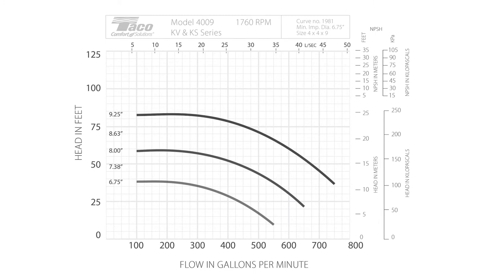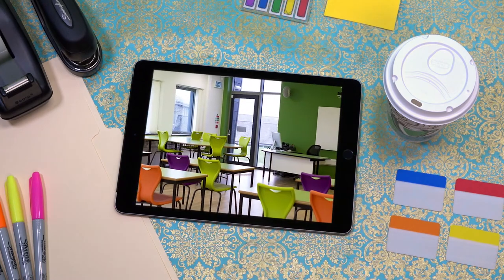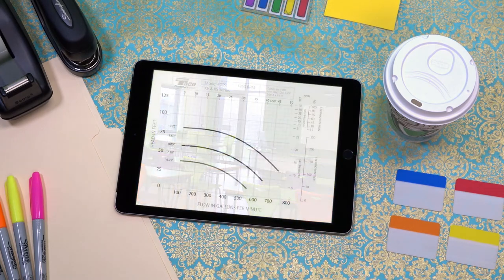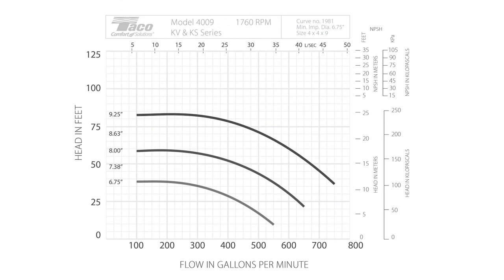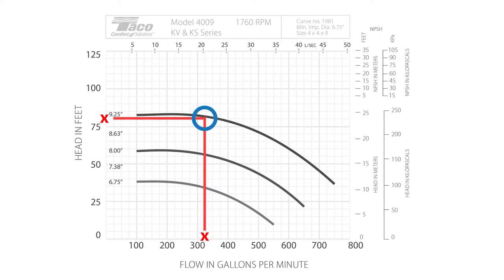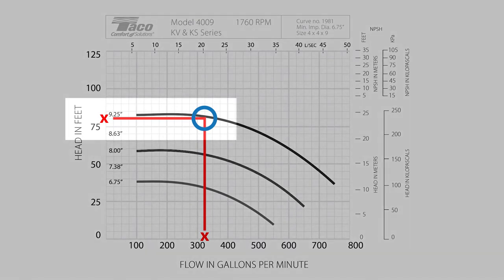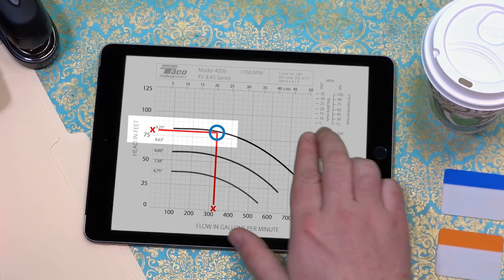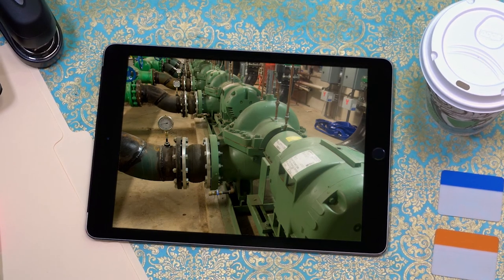Now you can use this chart to choose a pump that meets the requirements of your system. Let's say you need to pump 325 gallons per minute at 80 feet of head. You find 325 gallons per minute on the x-axis and draw a line vertically, and find 80 feet of head on the y-axis and draw a line horizontally. Where those two lines intersect is the operating point of the system. That point falls on the performance curve for this particular pump with a 9.25 inch impeller, which means you can select this pump knowing that it has the capacity to meet the needs of your system.